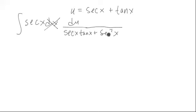And notice if we factor out a secant x out of this, it'll cancel with that secant. So we'll be left with du over tangent x plus secant x. But wait, that is the same thing as u, so you can just replace it with u.